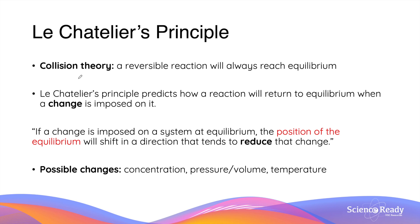In our last video on the Collision Theory and how it relates to the concept of equilibrium, we discussed the idea of how a reversible reaction will always reach the state of equilibrium, whereby the rate of the forward reaction becomes equal to the rate of the reverse reaction. In this video, we'll look at what's known as Le Châtelier's Principle, which is a very simple rule that helps you predict how a reaction will manage to return to equilibrium when a change is imposed on it.